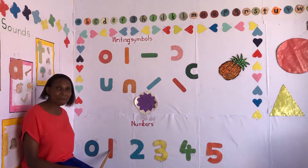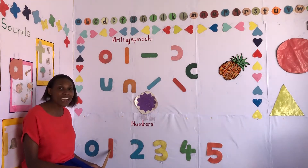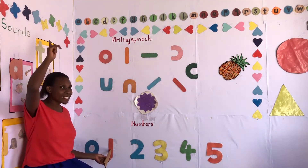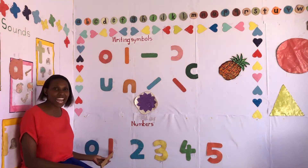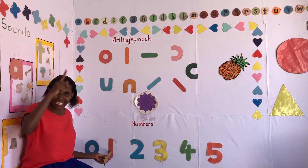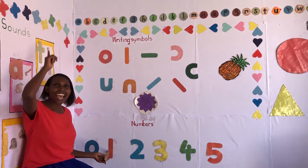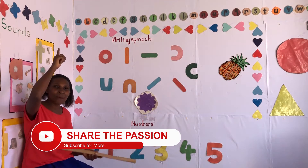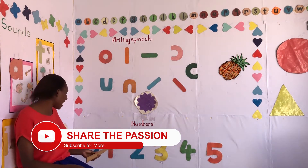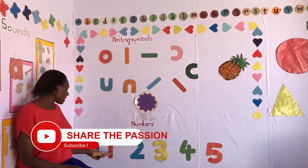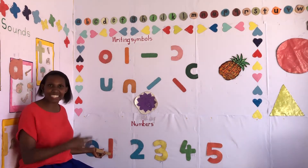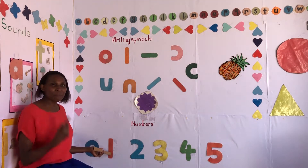Number one! And how do you write number one? How do you write number one? Remember, I told you: you write number one as a standing stick straight. How do you write number one? A standing stick straight. Again, write it in the air — number one, a standing stick straight. Again, number one, a standing stick straight. Repeat after me again: number one!